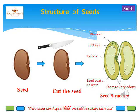Slide 11. Coming to the structure of seeds — if you cut the seed from the middle, you will find the cross section of the seed, which has different parts such as plumule, embryo, radicle, seed coat, and cotyledon. The seed coat is also called testa. The three most important parts of seeds are embryo, cotyledon, and testa. The embryo helps in the development of a new plant, the cotyledon stores food for the growth of the embryo, and the testa is the outer protective layer of the seed.